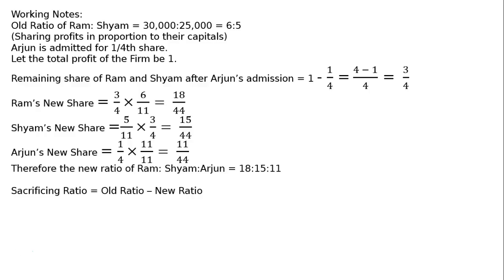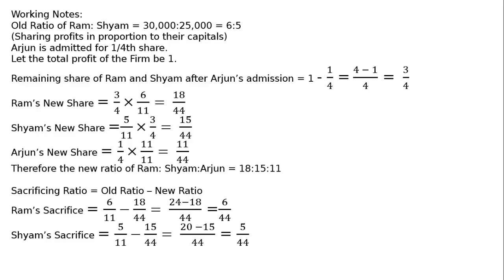Sacrificing ratio is equal to old ratio minus new ratio. Ram's sacrifice is 6/11 minus 18/44. Taking LCM as 44: 24 minus 18 = 6/44. Siam's sacrifice is 5/11 minus 15/44. Taking LCM as 44: 20 minus 15 = 5/44. Hence the sacrificing ratio of Ram to Siam is equal to 6 to 5.